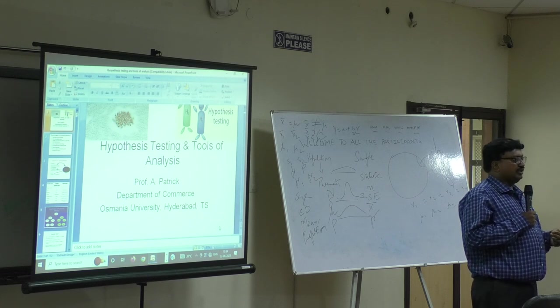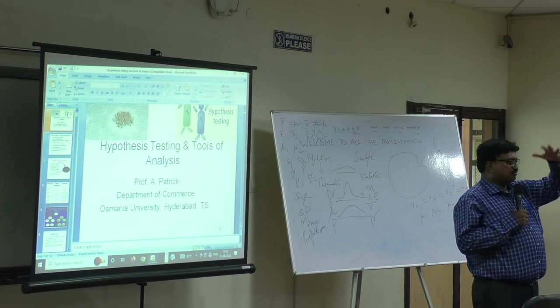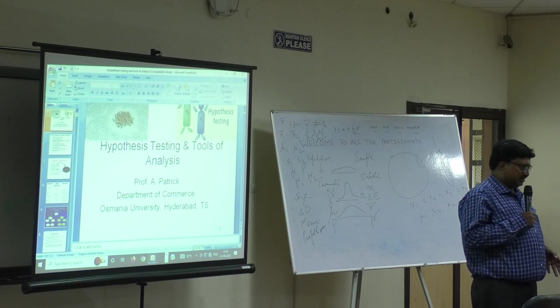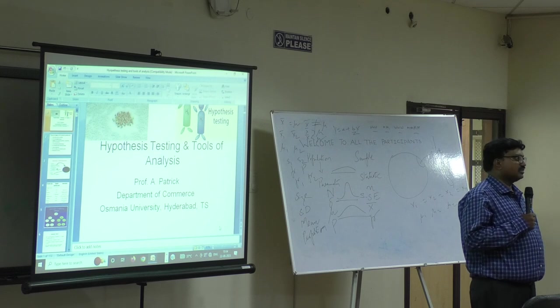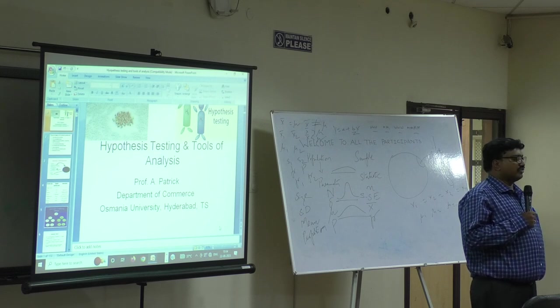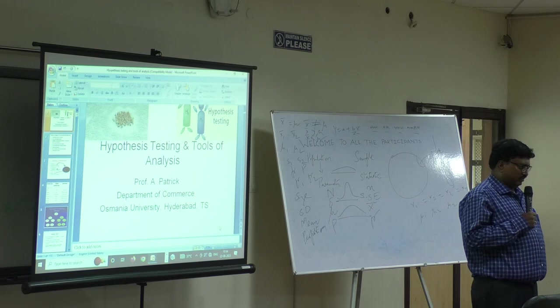SPSS is the processing speed and the kind of details the tables have been presented in the output. When you do even a simple correlation regression, it gives you information about F-test and other things. That is not much with Excel, but it is there with SPSS. But if you want to do advanced regression models, you'll have to go for E-Views.